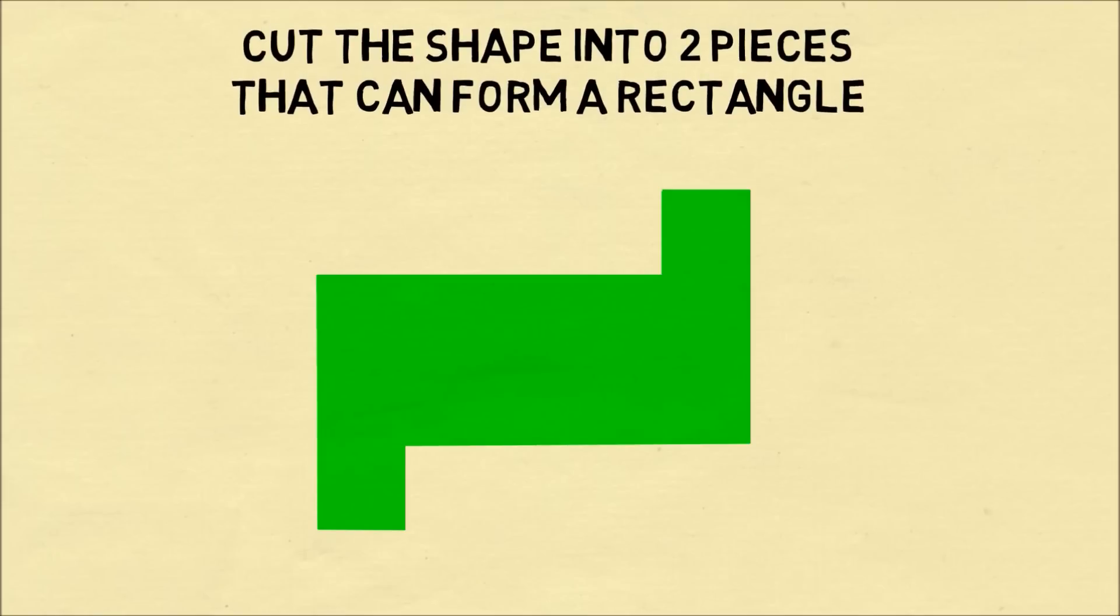Consider the following shape, which is a rectangle that has two tabs at the end. The puzzle is can you cut the shape into two pieces that can be rearranged to form a rectangle?